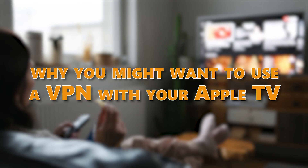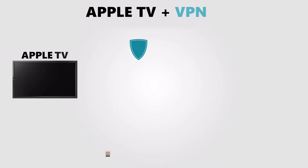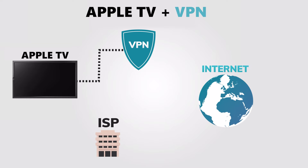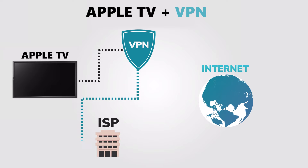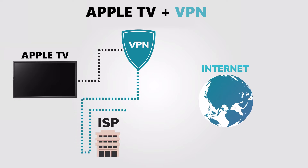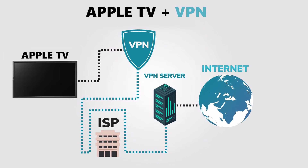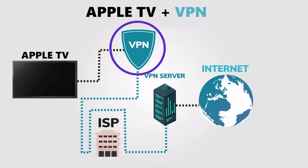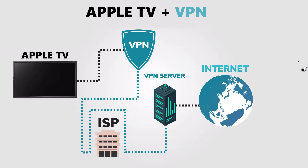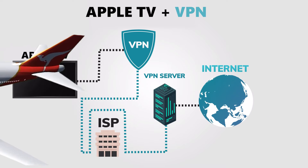Let's discuss why you might want to use a VPN with your Apple TV. A VPN, or virtual private network, encrypts your internet connection and hides your IP address, making it more difficult for third parties to monitor your online activity. This is crucial when streaming content on your smart TV, as your ISP or streaming services may try to track your viewing habits. Additionally, a VPN can help you access geo-restricted content that may not be available in your region when traveling abroad.